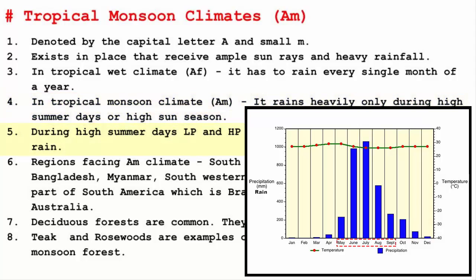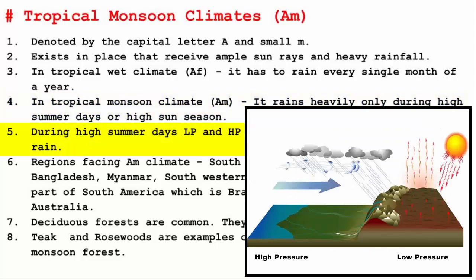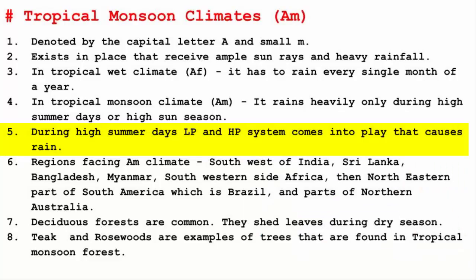Again, the low pressure and high pressure system comes into play, wherein there is a difference in the way land and water heats up. Otherwise, both the Tropical Wet as well as Monsoon Climate have a similar climatic condition.